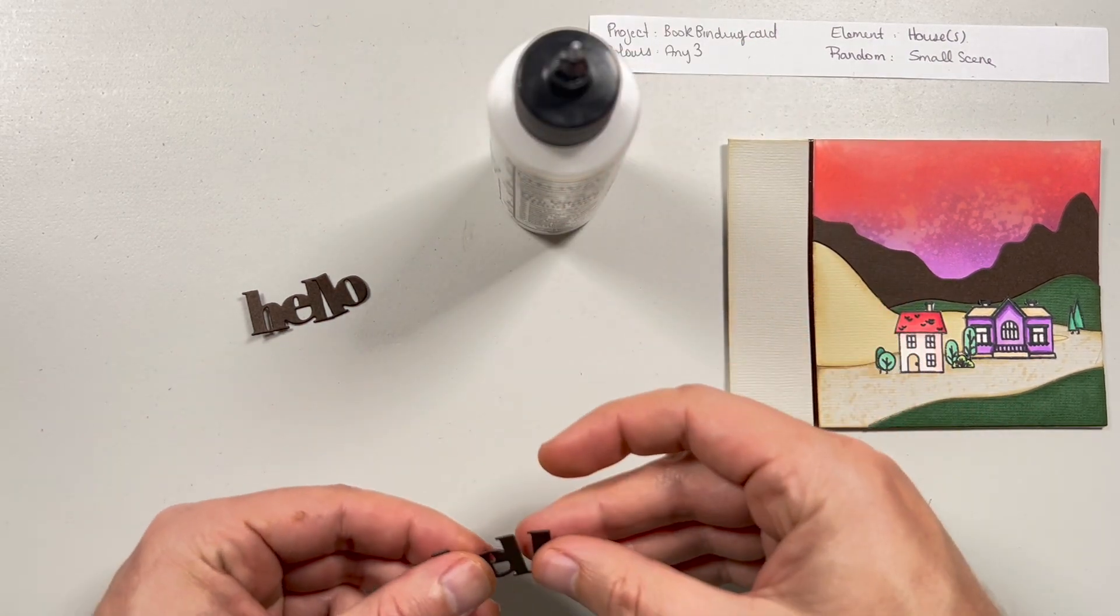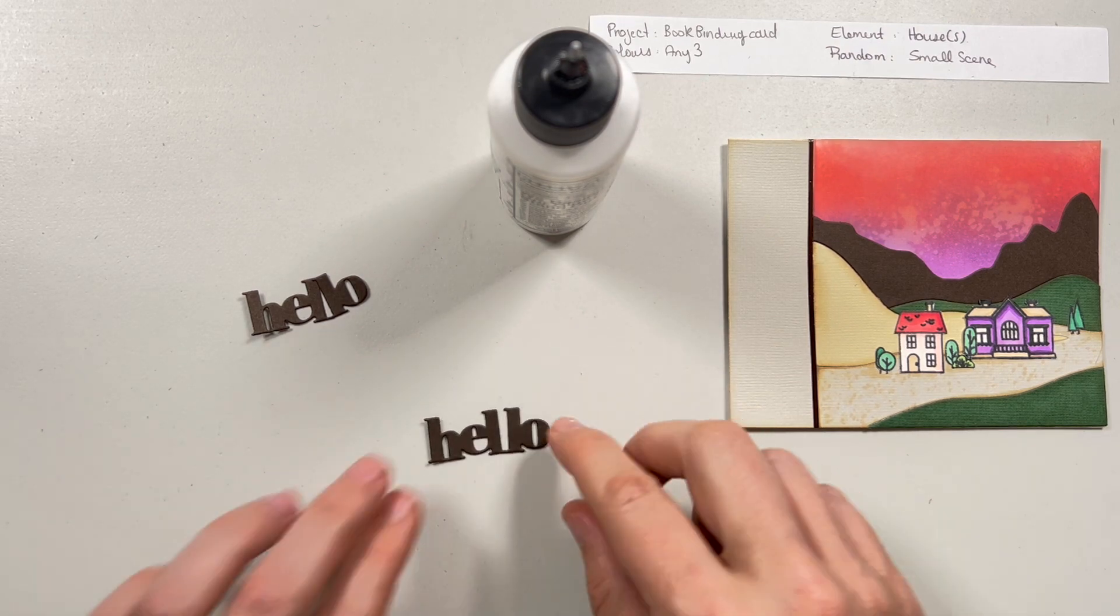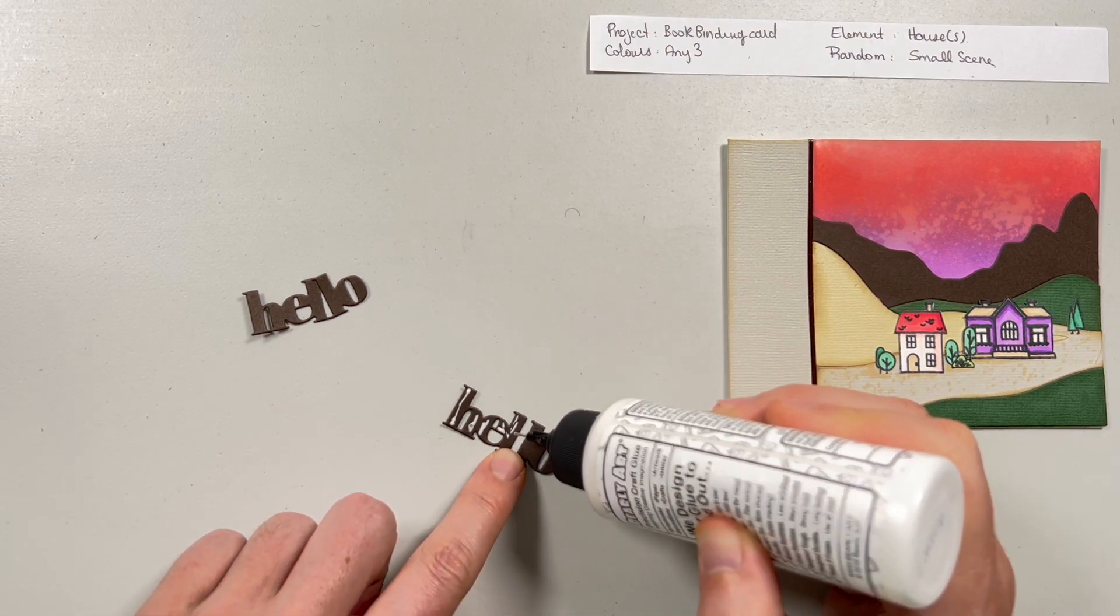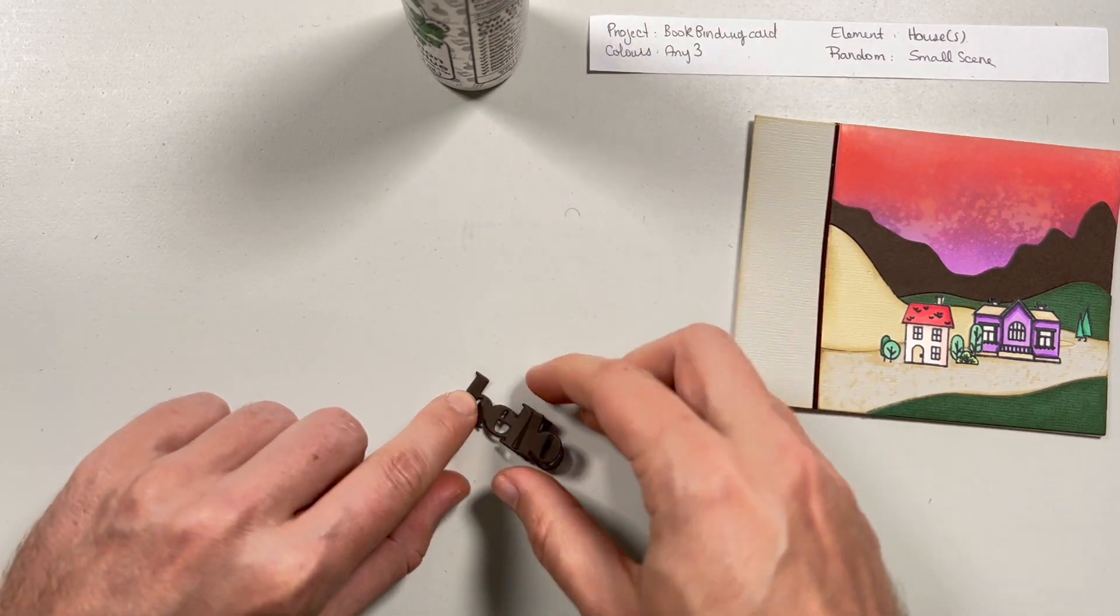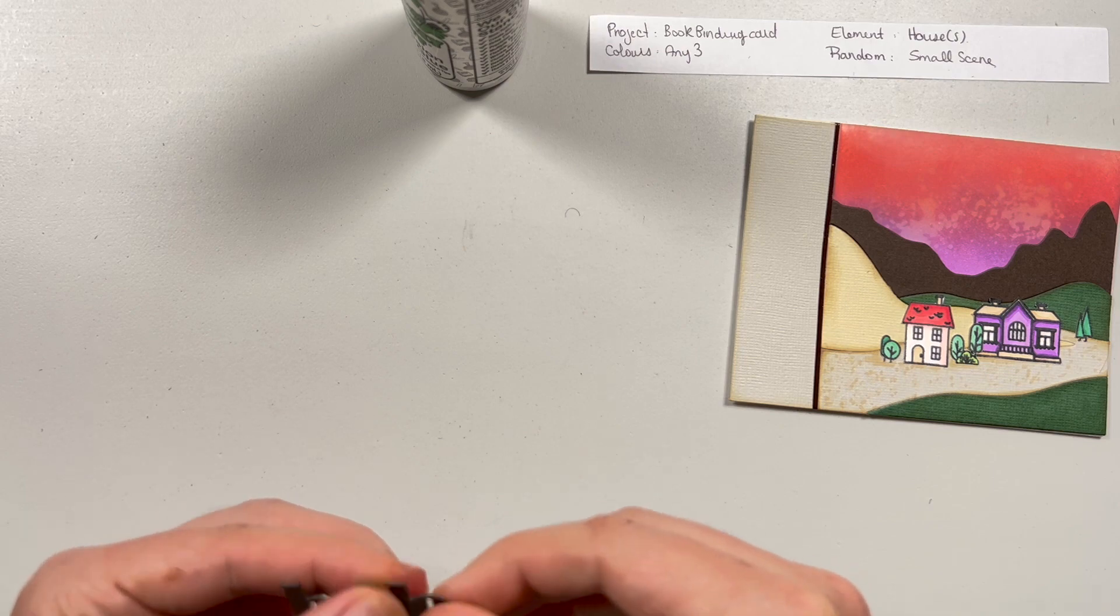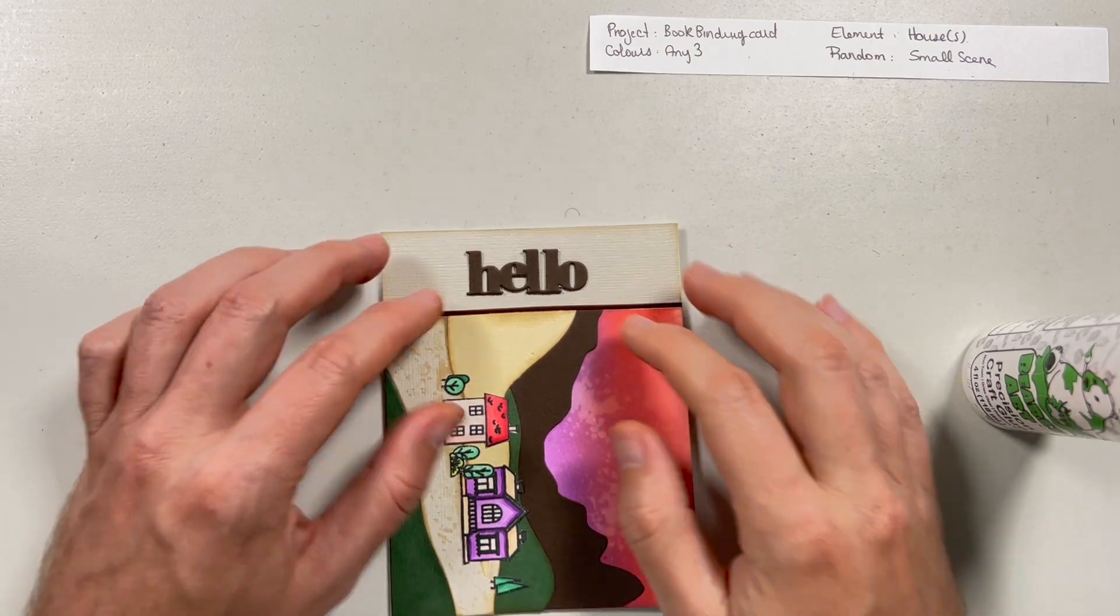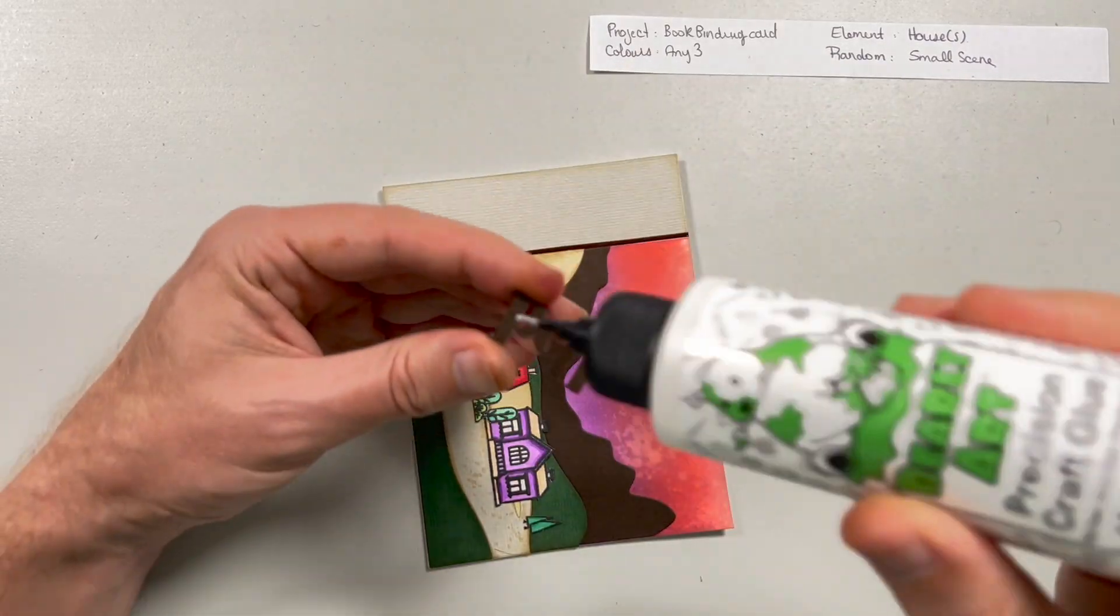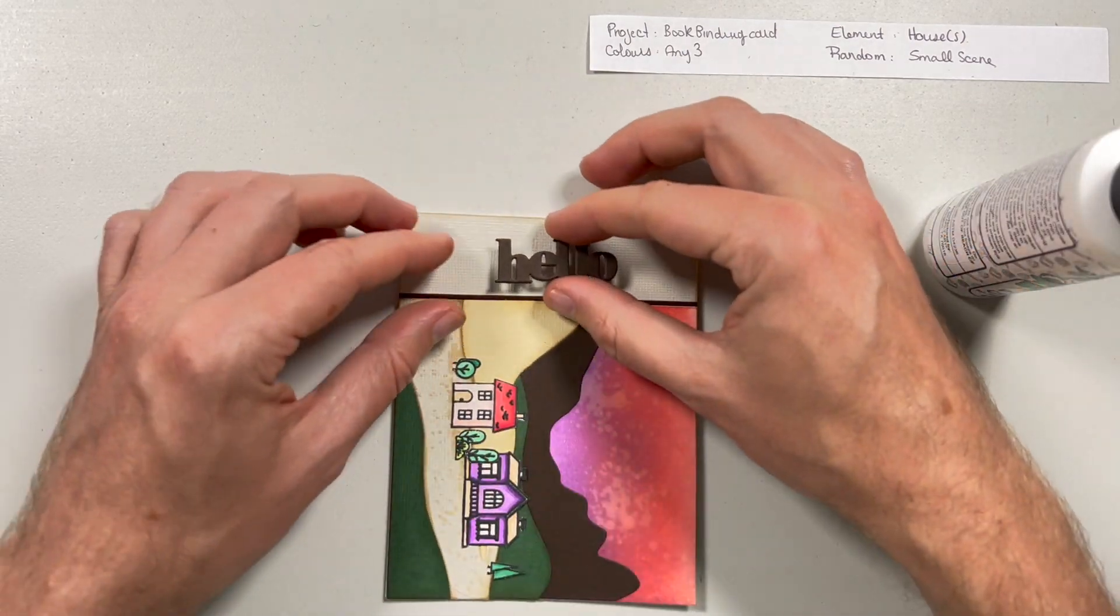I then have this Hello die that I got from a Simon Says kit I believe last year or year before. I cut it three times in the same brown color as the mountains in the scene. That just gives me a nice little sturdy thickness to a sentiment. I typically always do three layers on a word sentiment die. And then I'm just going to glue that down centering it right in the center. Centering it right in the middle of that banner. That margin I guess you can say.